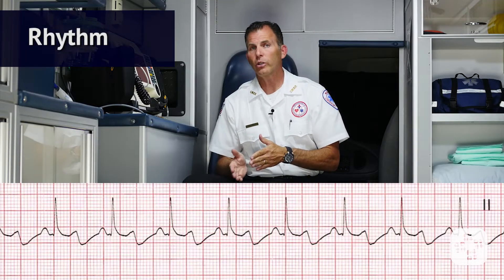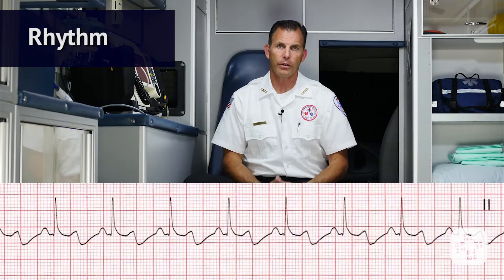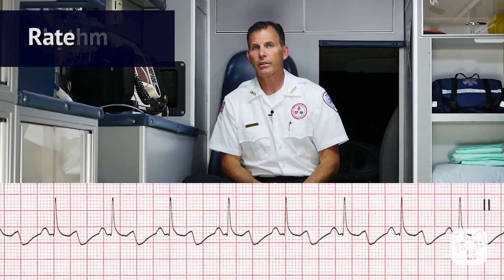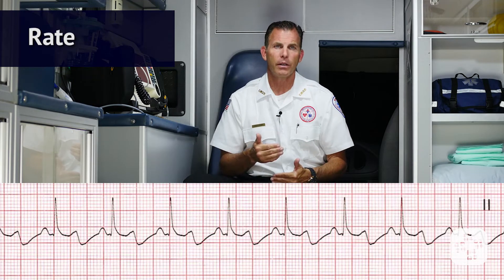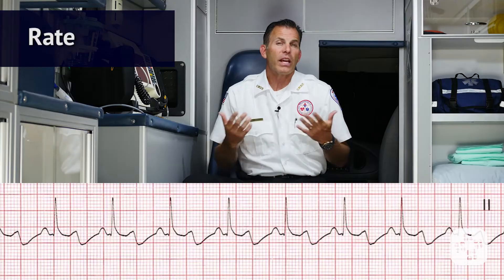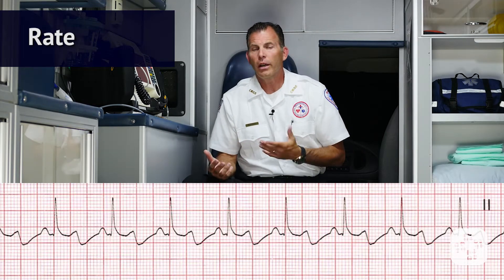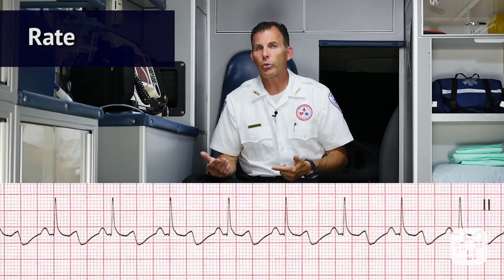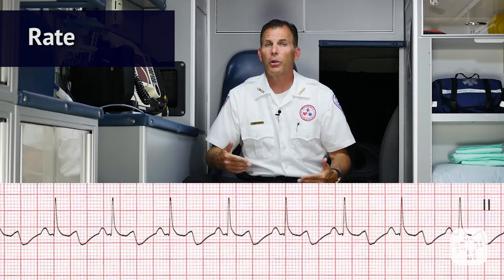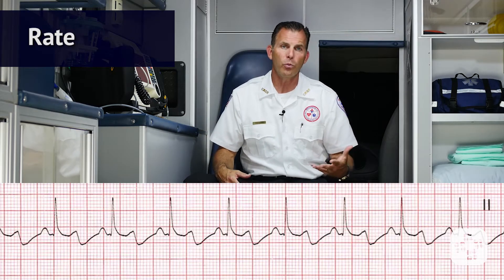Is the rhythm regular or irregular? In this case, it's regular. Next we look at the rate. What is the rate? This child's rate is 80 beats per minute. We have to ask ourselves: is that rate normal? Is it fast? Is it too slow? Remember, normal heart rates will vary by age with pediatric patients. A normal heart rate for a 12-year-old might be bradycardic for an infant or newborn.